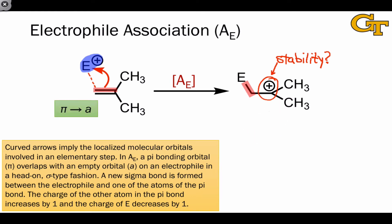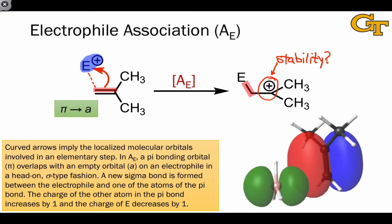This is a pi to A type interaction as the electrophile contains an empty atomic orbital, and an image of the orbital overlap involved is shown here.